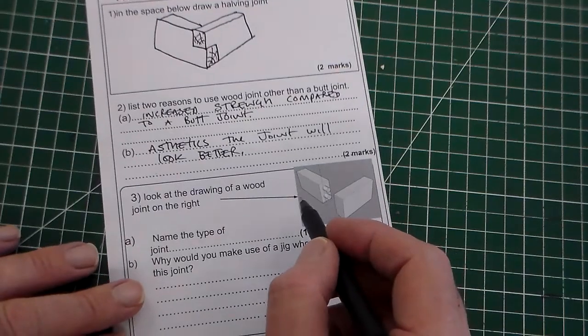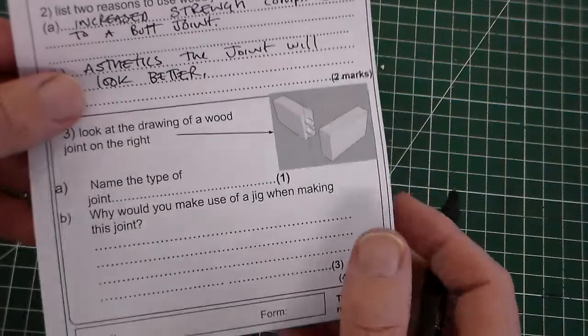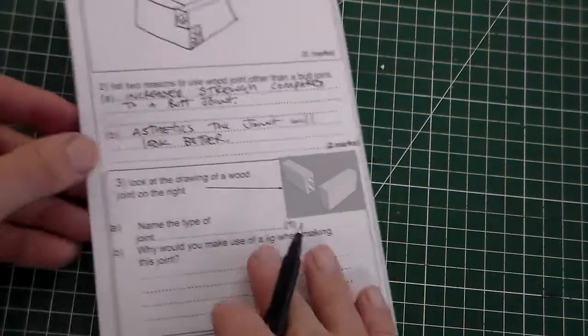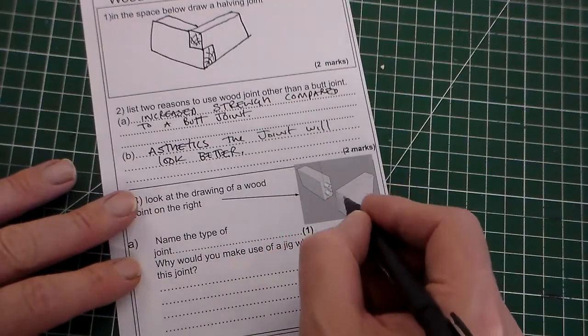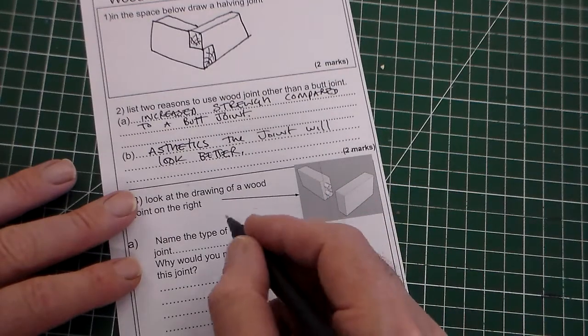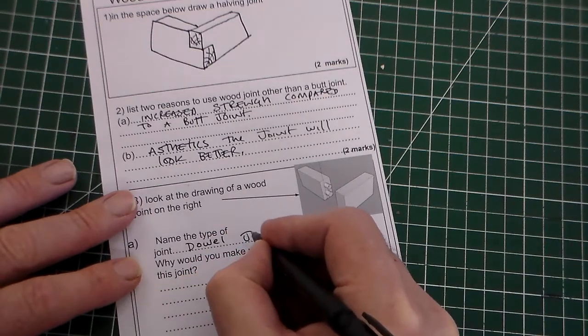Look at the drawing of a wood joint on the right. So we've got a little drawing there. You can just see that joint there. This is a dowel joint. These two pieces of wood here are dowels and they fit into two holes there. So we would call this a dowel joint.